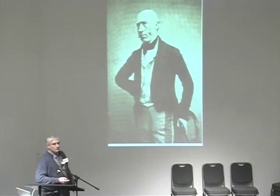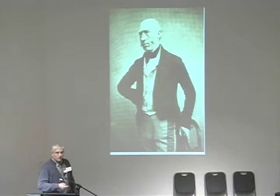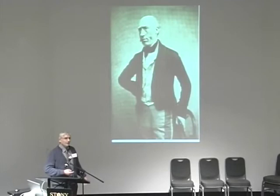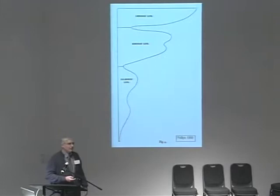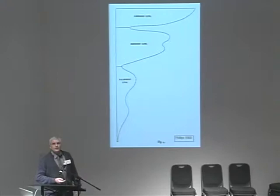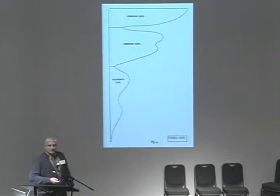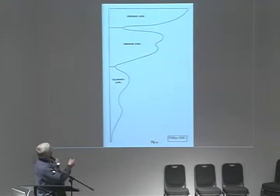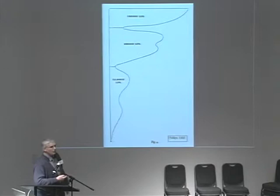This is John Phillips, an English geologist who happens to be the nephew of William Smith, who drew the first geological map of Britain. Martin Rudwick rediscovered some of Phillips' work in the 1970s and brought it to the attention of paleontologists, who have been fond of reproducing this figure from Phillips' 1860 book, Life on the Earth: Its Origin and Succession, as what we like to think of as the first Phanerozoic global diversity curve.